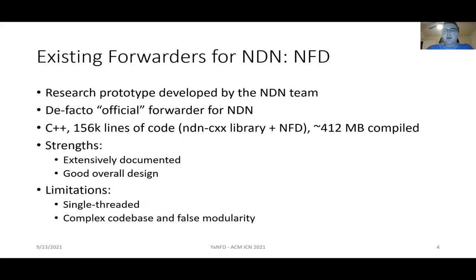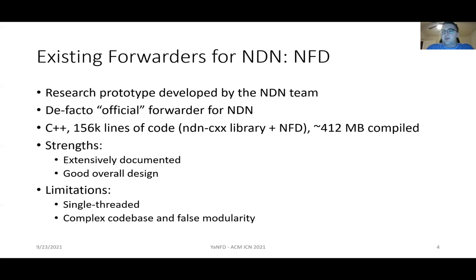The first forwarder we're going to talk about is NFD. NFD is a research prototype forwarder developed by the NDN team, and because of this it is thought of as the de facto official forwarder for NDN. It is written in C++. It and the library it requires have over 150,000 lines of code and result in an executable over 400 megabytes in size. NFD's strengths are that it is extensively documented, and its design nicely splits out responsibilities of different components based upon their role in the forwarding process.